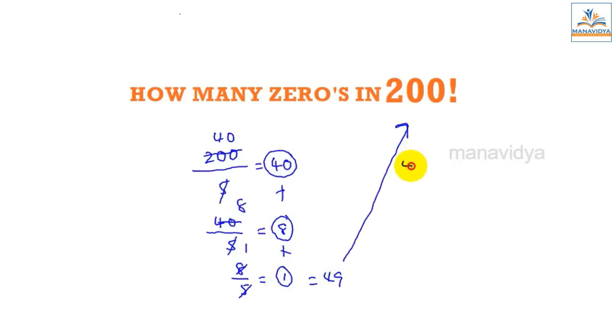In 200 factorial, the number of zeros is 49. We will find the number of zeros is 49.